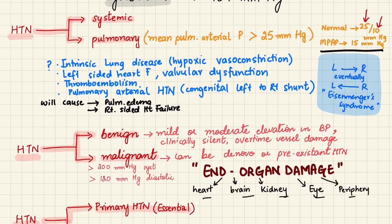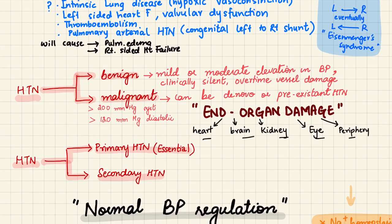Remember this. Hypertension can also be classified as benign and malignant. Benign means it is a mild or moderate elevation in blood pressure; it is clinically silent and will cause vessel damage over a long period of time. Malignant hypertension means there is a sudden extreme rise in blood pressure, resulting in end-organ damage.